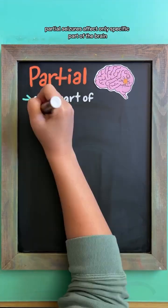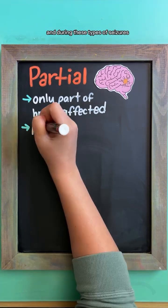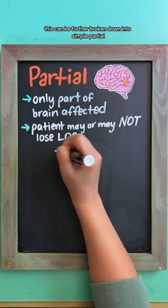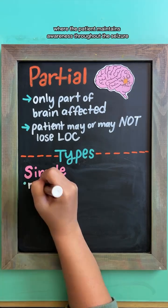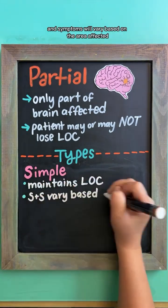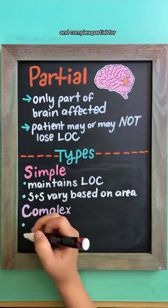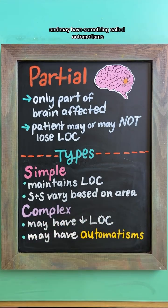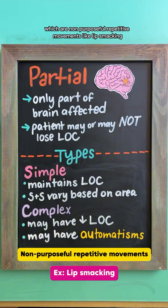Partial seizures affect only a specific part of the brain — think focal equals local, it's local to one area in the brain. During these types of seizures, the patient may be unconscious or conscious. This can be further broken down into simple partial, where the patient maintains awareness throughout the seizure and symptoms will vary based on the area affected, and complex partial, where the patient may lose awareness of surroundings and may have something called automatisms, which are non-purposeful, repetitive movements like lip smacking.